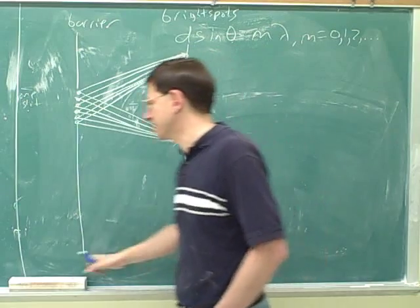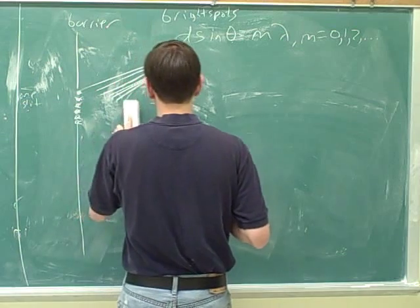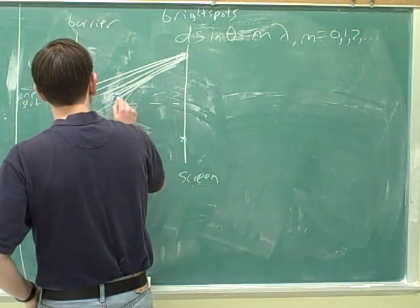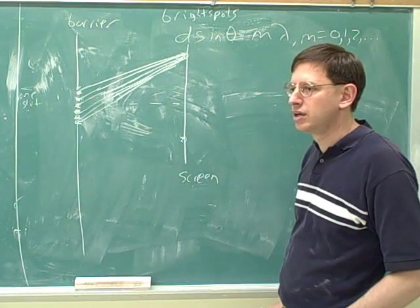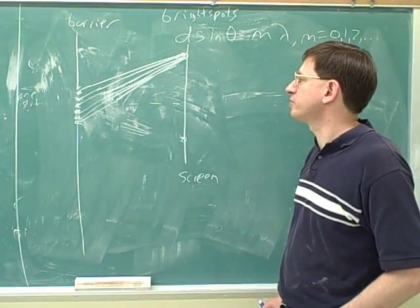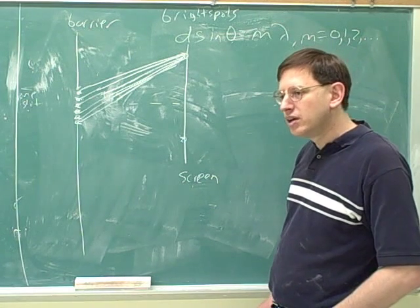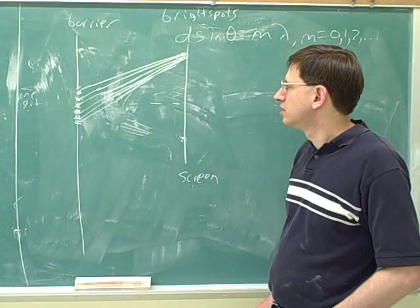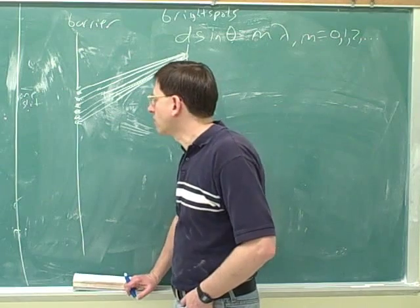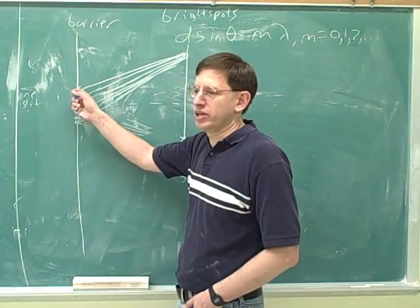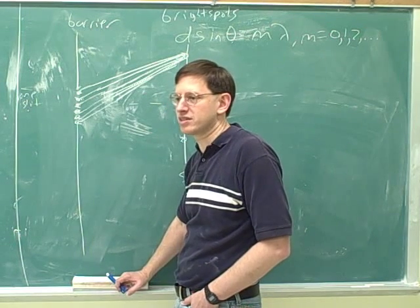We'll just focus on one point. The key idea is that we can get multiple sources even without multiple slits, just because of Huygens' Principle. A single wavefront of light is already split up into a bunch of different point sources — we can treat each point on that wavefront as its own point source of light, even without the slits.